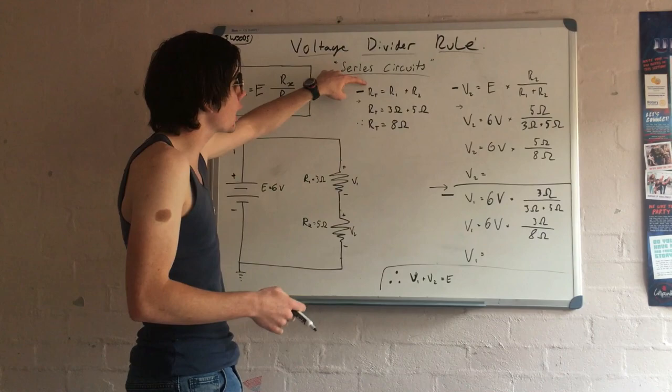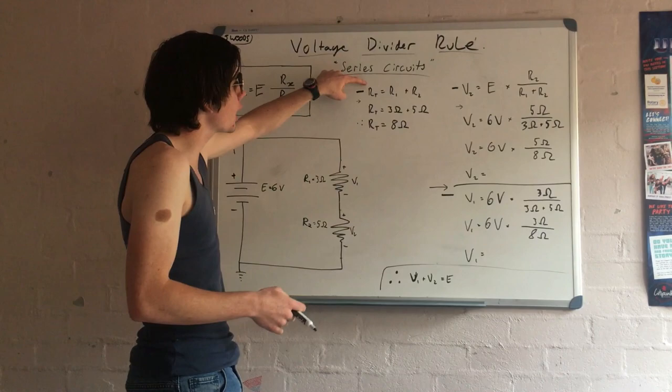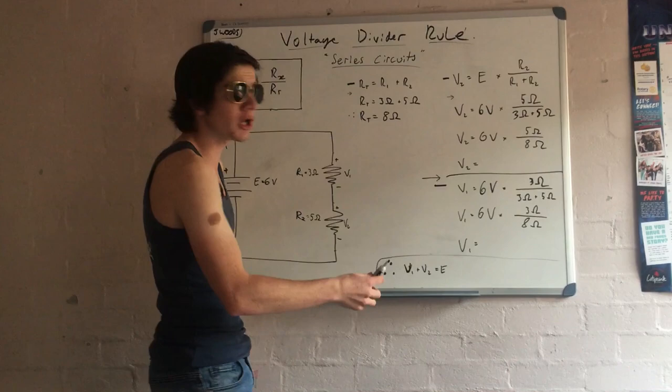So this is how you find the total. This is just a simple little algebraic equation. So you've got RT is equal to R1 and R2, right? Simple. So we put our 3 value in, and we put our 5 value in. It's in ohms. What do you know? And then RT is equal to 8 ohms.